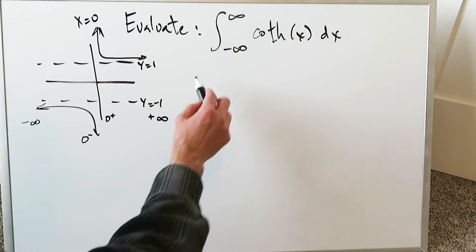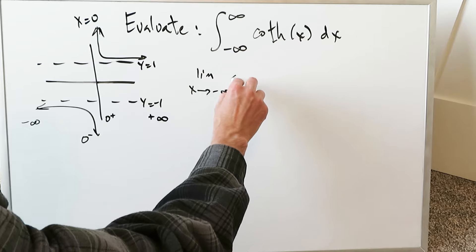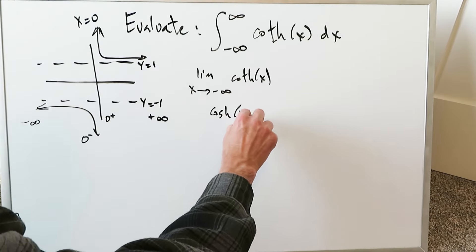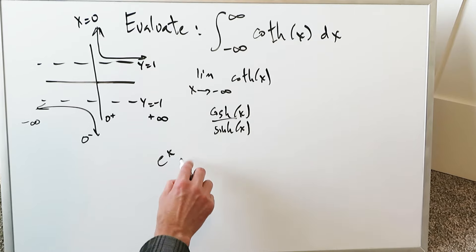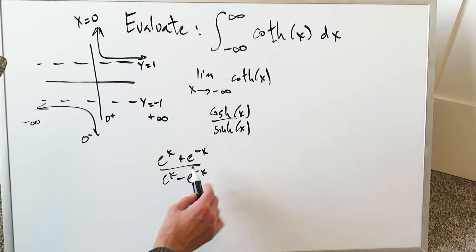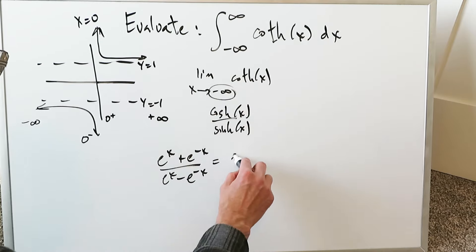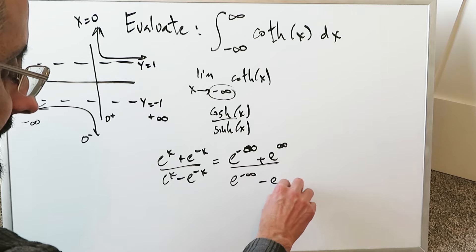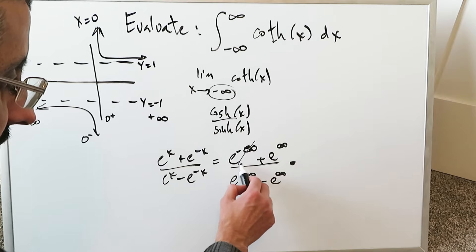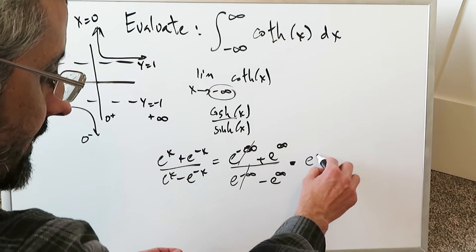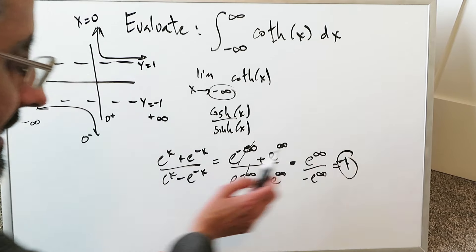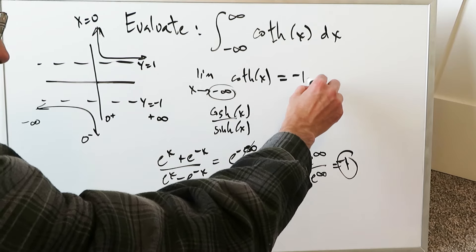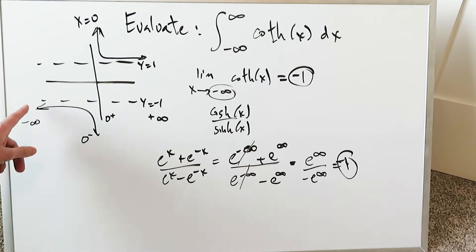Each of these limits can be evaluated, and some exist while some do not. For the limit as x approaches minus infinity of hyperbolic cotangent x, it exists. Break it down: hyperbolic cosine divided by hyperbolic sine gives (e^x + e^{-x}) / (e^x - e^{-x}). The over-twos cancel. Plugging in minus infinity, the e^{-∞} terms zero out, leaving e^∞ / (−e^∞) = −1. The function approaches the horizontal asymptote y = −1.